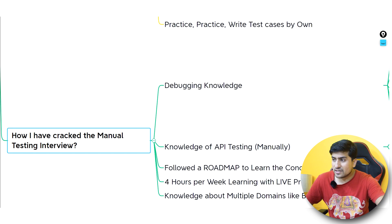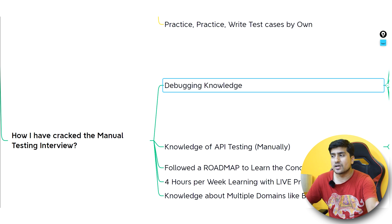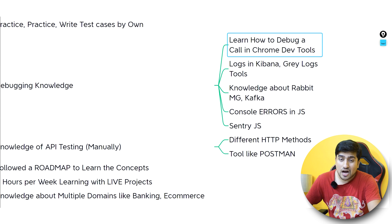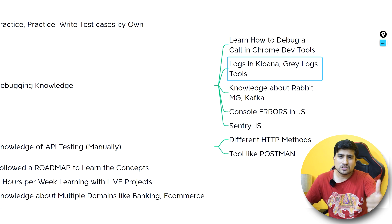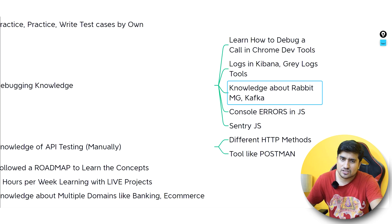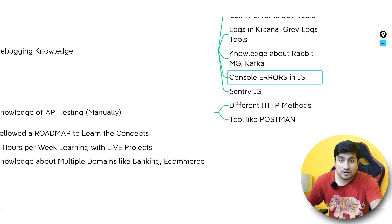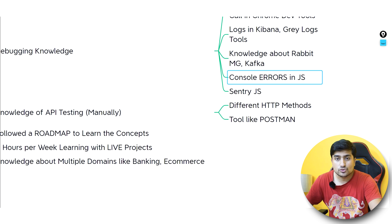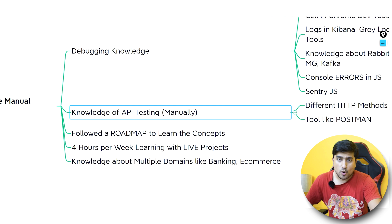Now comes the interesting part — how I was able to crack the manual testing interview. First, I had very good debugging knowledge. This means learning how to debug on Chrome DevTools, and knowing tools related to Graylog, Kibana, and Sentry.js — these are logging tools. For a web application, you need to know how to see logs and console errors, both for web and mobile applications. I have also worked on Kafka and RabbitMQ, though those are optional.